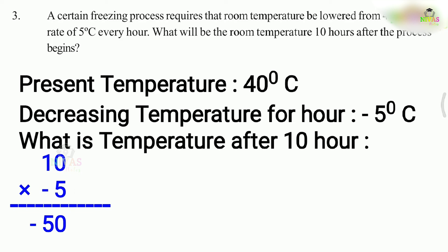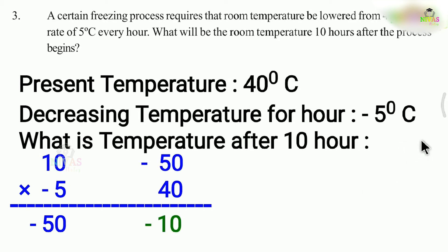The cooling is minus 50. But at the start, room temperature is 40 degrees. That means if it is already 40 degrees, and in 10 hours it is minus 50, so the answer is 40 plus minus 50, which is minus 10. So the room temperature after 10 hours is minus 10 degrees Celsius.